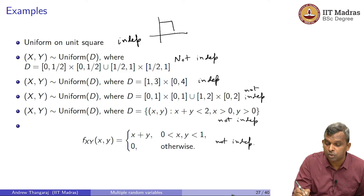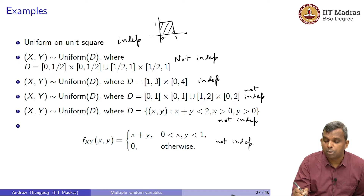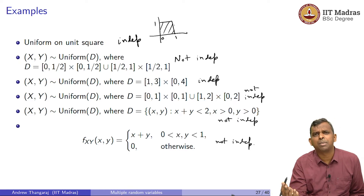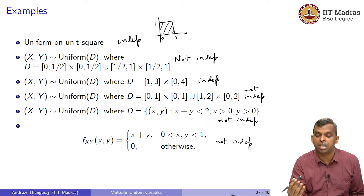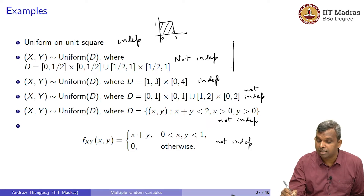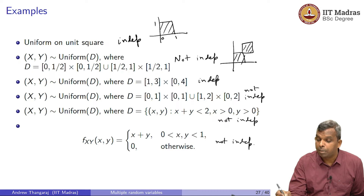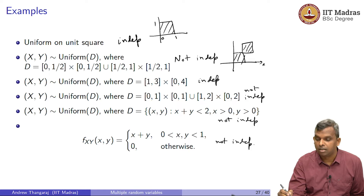From the support itself you can sort of guess whether it is independent or not. Notice the support here: for the uniform on the unit square, as x varies, for any given value of x the distribution of y remains the same — it does not change at all. But in this other case, the support is a different shape, and depending on the value of x, the distribution of y can change, so clearly it will not be independent.